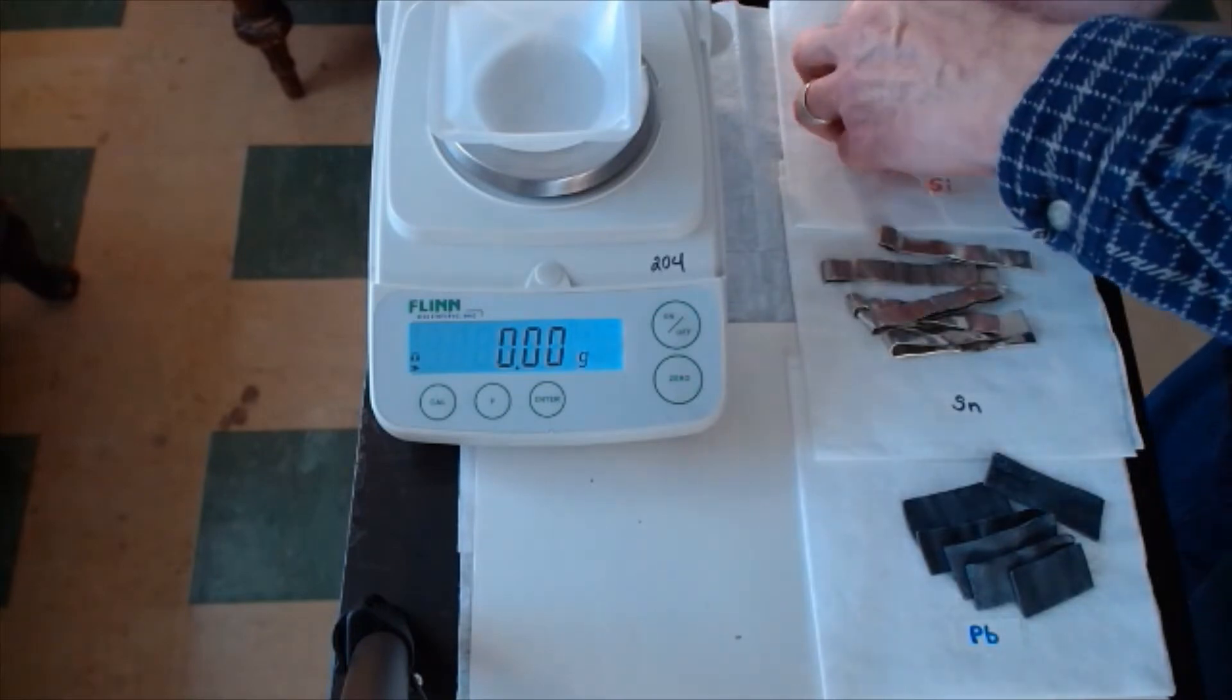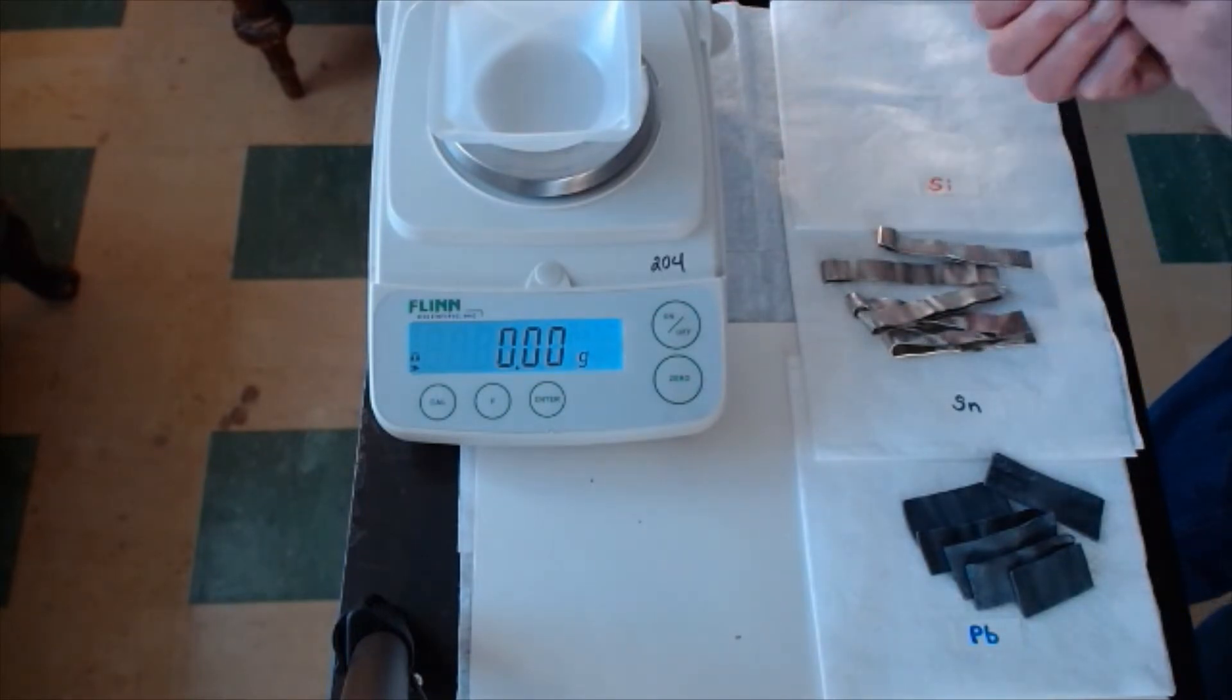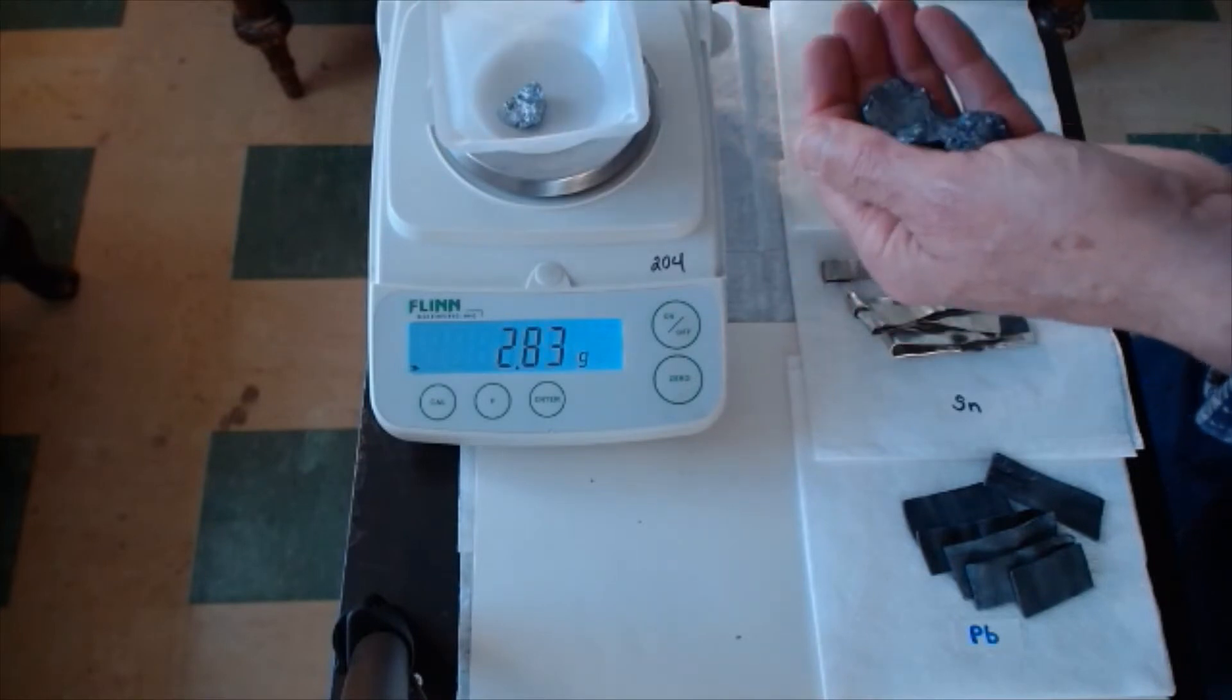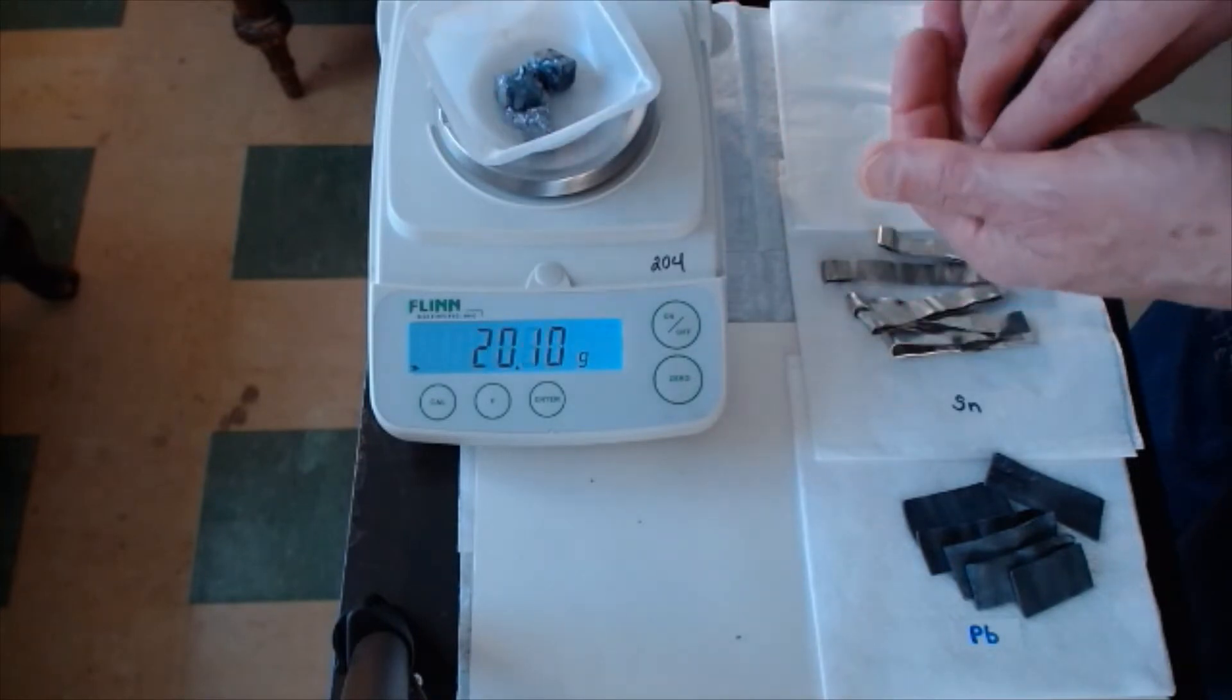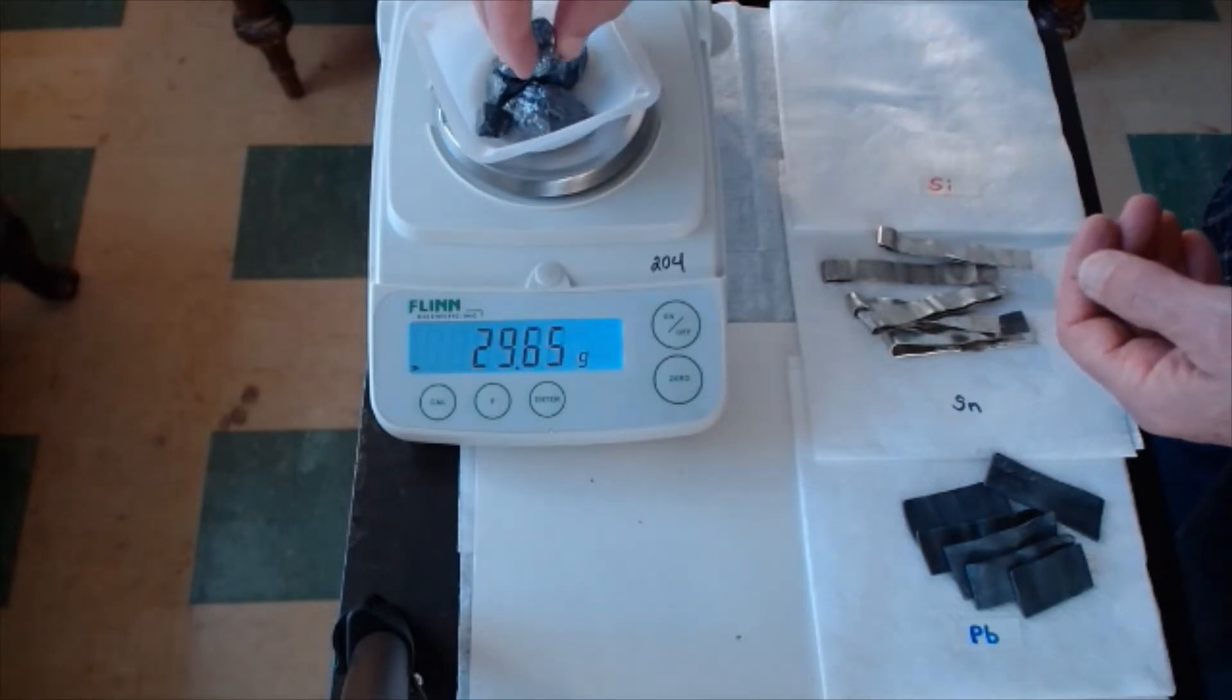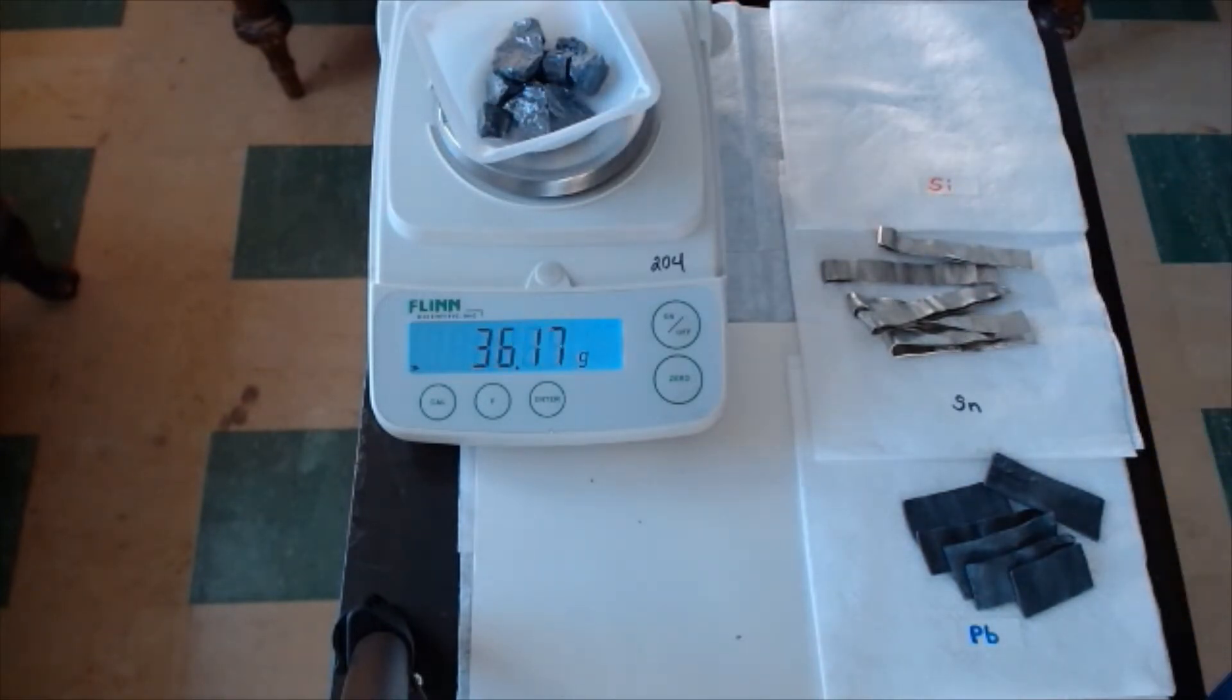Let's weigh the silicon pieces first. I'm just going to put them all on here. And then we'll wait for the scale to settle down, and you can record the mass of the silicon. There it is, 36.17 grams, the mass of silicon.